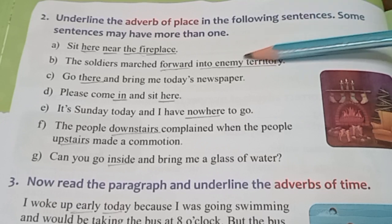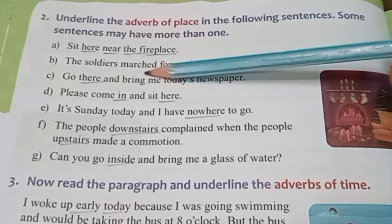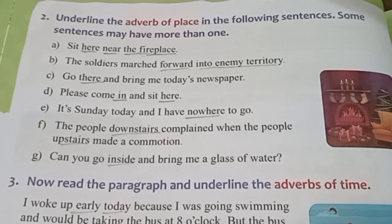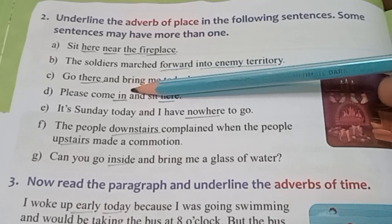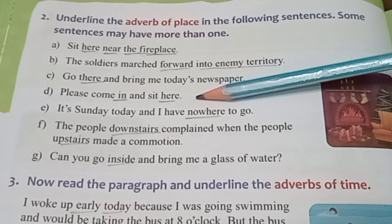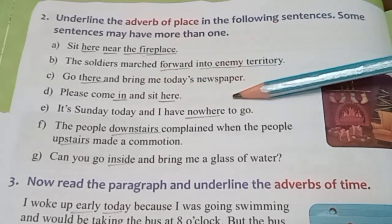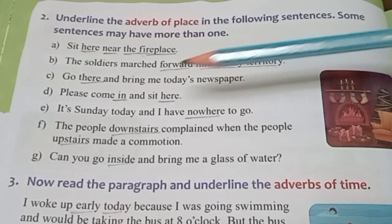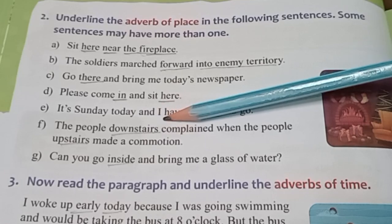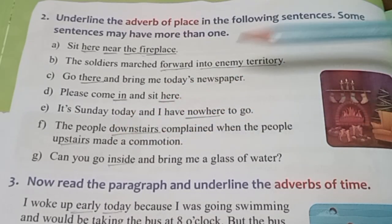For B, the adverbs of place are forward and in. For C, the adverb of place is there. For D, the adverb of place is in, and also here. For E, the adverb is nowhere. For F, the adverbs are down and upstate.